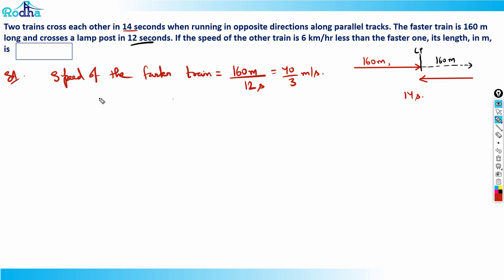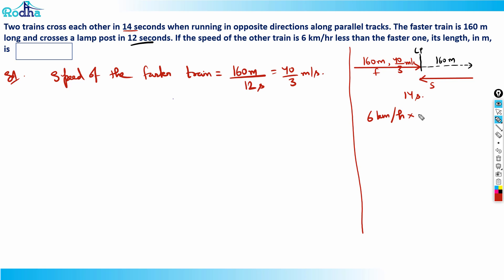Now what is the speed of the slower train? The slower train's speed is 6 km/h less than the faster one. So I convert 6 km/h to meters per second by multiplying by 5/18, which gives 5/3 meters per second.